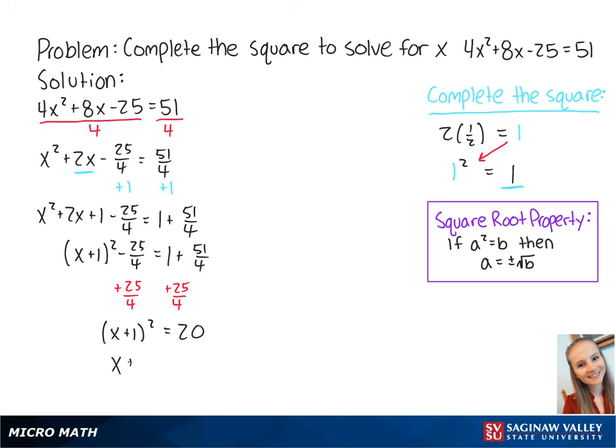Using the square root property, we get x + 1 = ±√20. The radical can be simplified because 20 = 4 × 5 and the square root of 4 is 2.